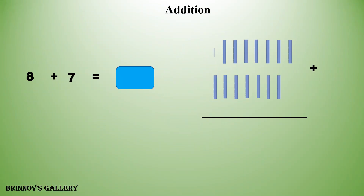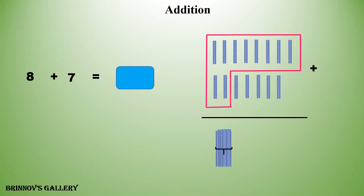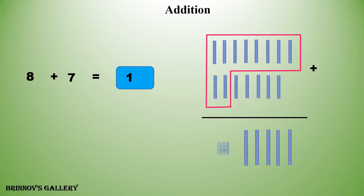1, 2, 3, 4, 5, 6, 7, 8, 9, 10. We have a bundle of 10 and remaining 1, 2, 3, 4, 5 — 5 ones. So we have one 10 and 5 ones. So, 8 plus 7 is equal to 15.